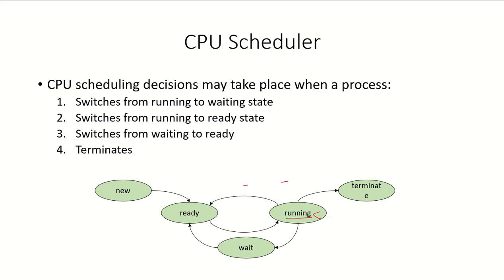Another scenario is that a process in the wait state has now completed its task — done its I/O or waited for an event that is now complete — and has gone back into the ready state. When it is in the ready state it will be available in the ready queue, and whenever the CPU has to be allocated next, one of the processes from the ready queue will be assigned the CPU.